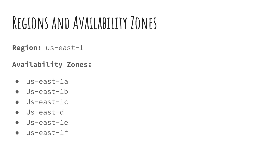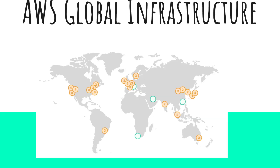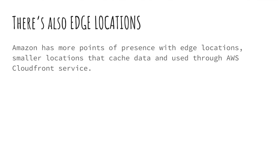These regions and availability zones together make the AWS global infrastructure. You might also be thinking about edge locations — Amazon has more points of presence with edge locations. There are multiple edge locations around the world. These are smaller locations that cache your data so that the data is closer to the customer and customers can access your data faster. CloudFront is a service on AWS that lets you use edge locations to store and cache data near the customer.